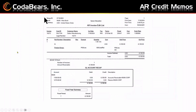This is what the credit memo will actually look like when we do the AR invoice edit list. It'll show you the part number if you put one in, the quantity, and the extended price. It's best practice to put the quantity in as a minus one and let it come through that way, instead of putting minus $8,100 in the unit price.